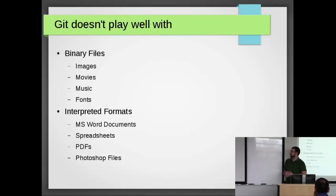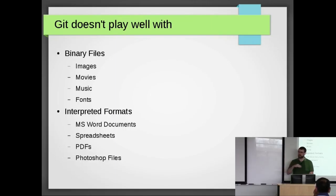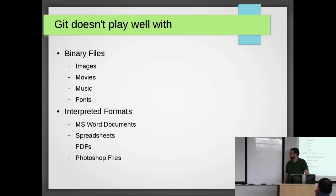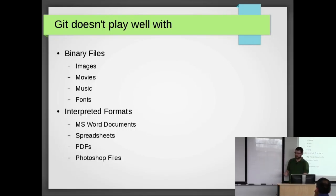But these are things Git does not play well with: binary files — so images, movies, fonts, things like that. Git will tell you that they changed, but it can't do a line-by-line change. In a binary format, it's just one long line, so you can't really tell what changed. Also interpreted formats — things that you can view as text, but are actually binary formats: Microsoft documents, spreadsheets, PDFs, and Photoshop files. You can say that they changed here and here, but you just can't go back and look at exactly what was changed.